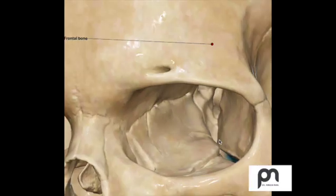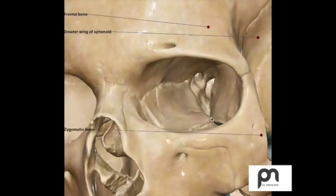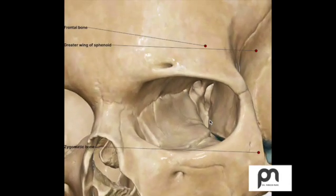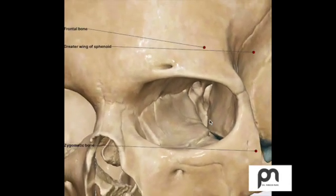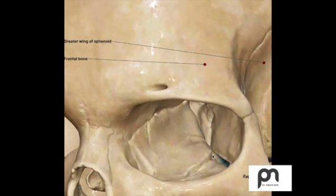We can see the greater wing of sphenoid over here. Let's have a look on the left side. This fissure forms the door or the entry to other structures. Can you see this bluish demarcation? That's your infratemporal fossa, ITF.